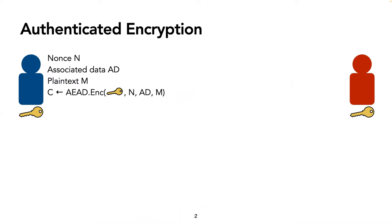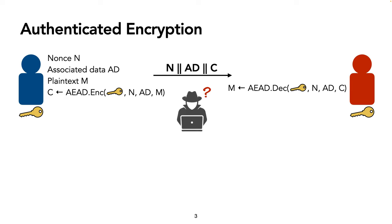To begin, we recall the definition of authenticated encryption with associated data, or AEAD. This cryptographic primitive assumes that two parties share a secret key. The sender chooses a nonce and associated data and encrypts the plaintext message using their secret key. They can then send the nonce, associated data, and ciphertext to the recipient, who can decrypt using the secret key to recover the plaintext message.